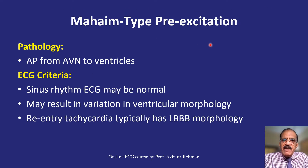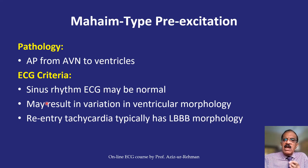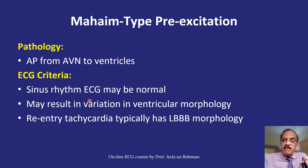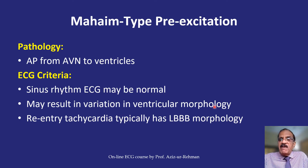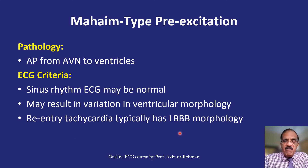Mahaim type pre-excitation syndrome has an anomalous pathway from the AV node to the ventricles. The ECG looks like a normal sinus rhythm with no problem with PR interval, but QRS morphology may be abnormal. It may result in re-entry tachycardia, and if there is re-entry tachycardia there may be a left bundle branch block pattern, because these anomalous pathways are usually present in the anterograde part.